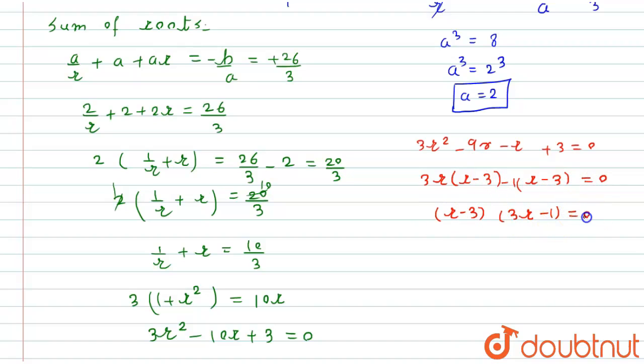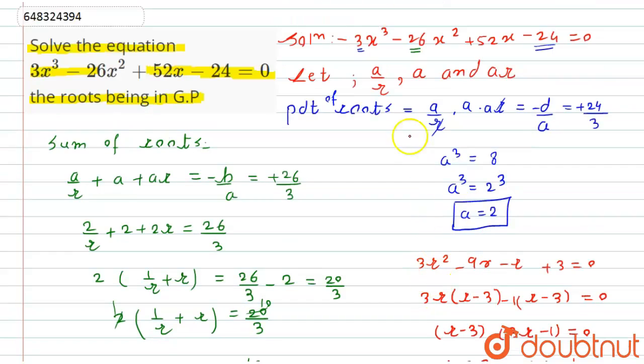3r - 1 equals 0. This implies r equals 3, or r equals 1/3. So here we are getting r having two values, 3 and 1/3. So finally on putting these values in a/r, a, and ar, we get the required roots. Here, simply